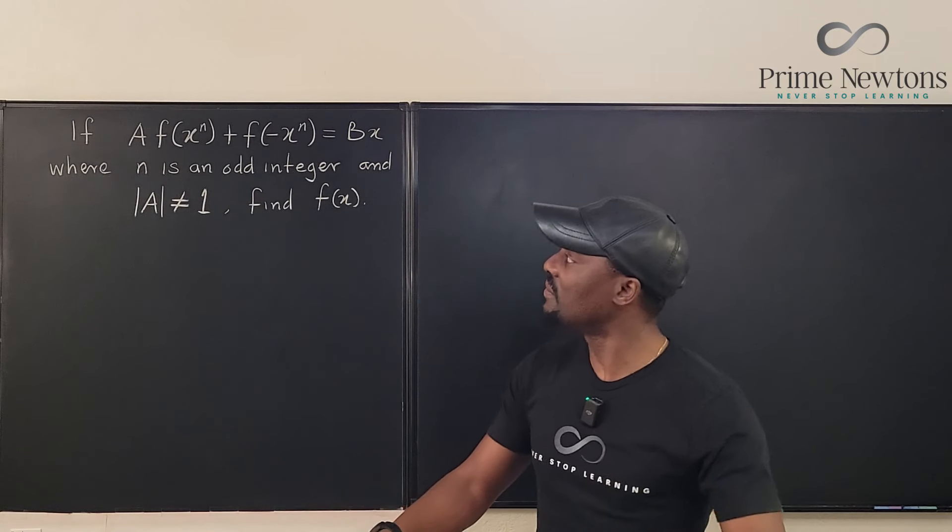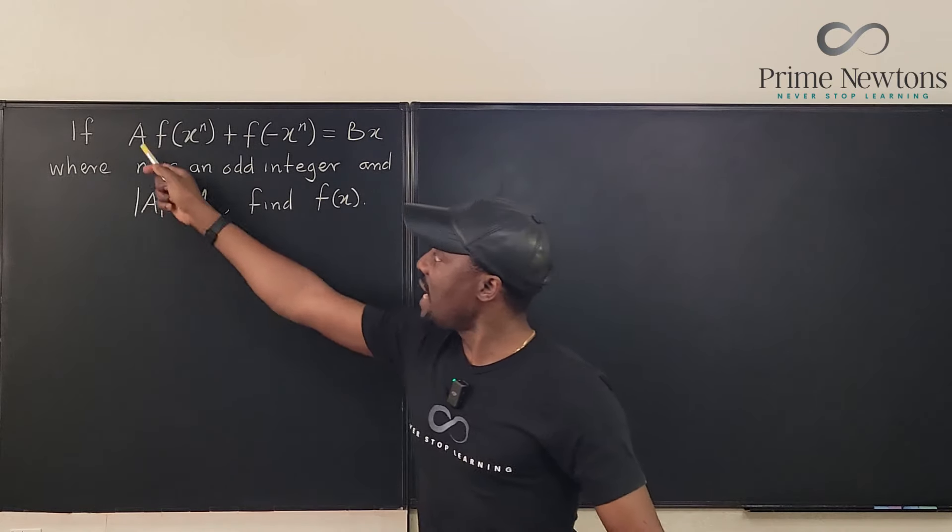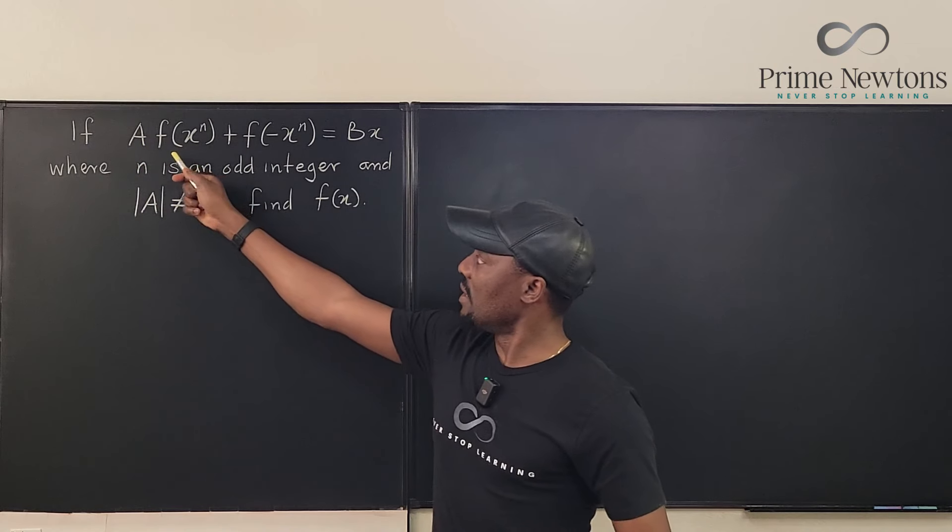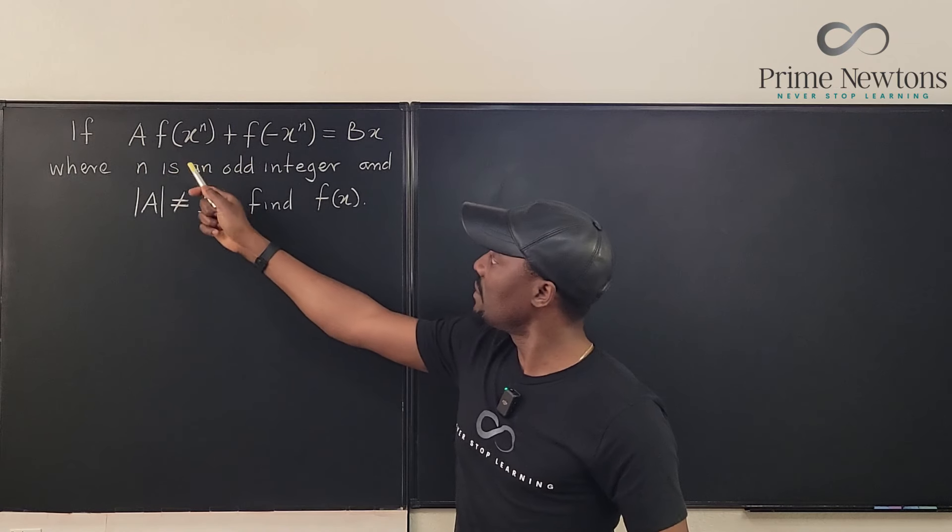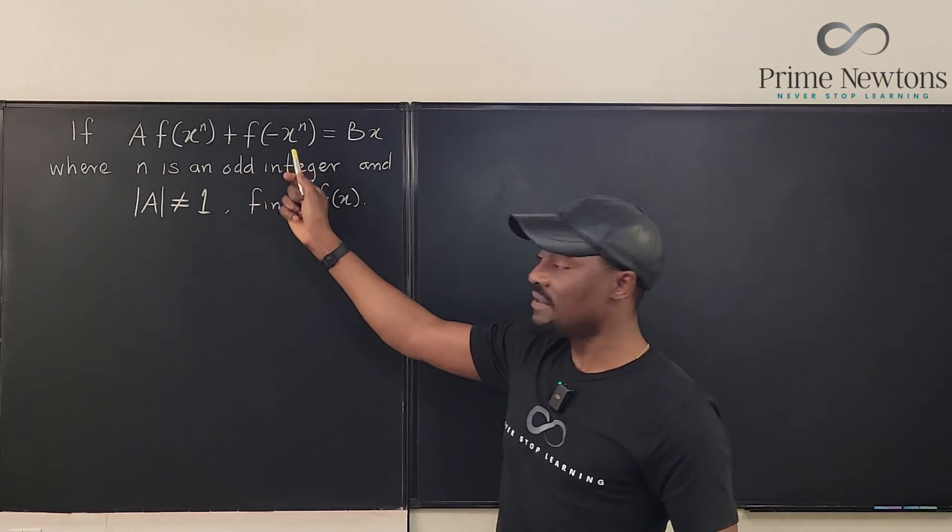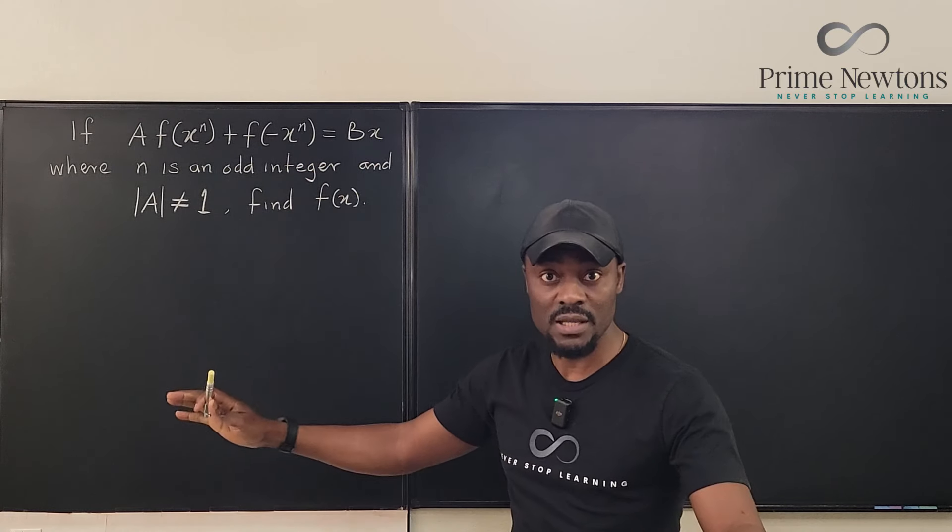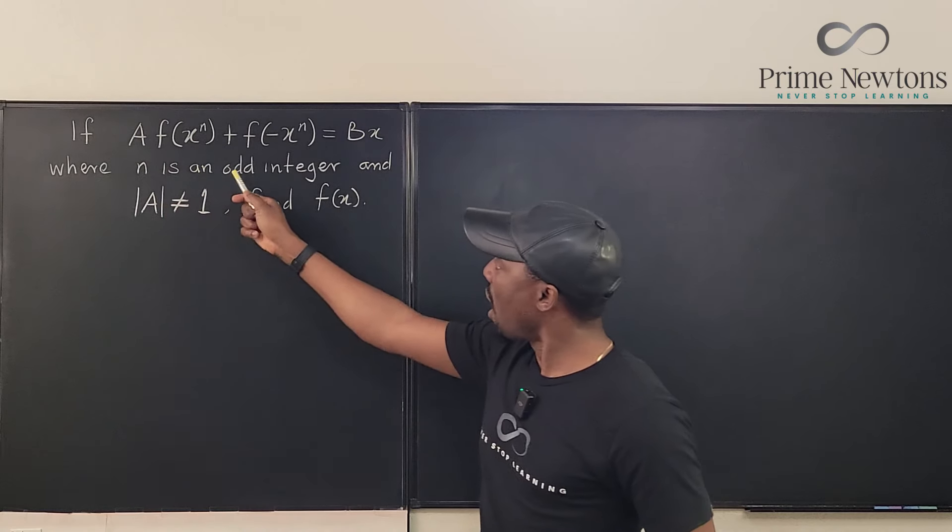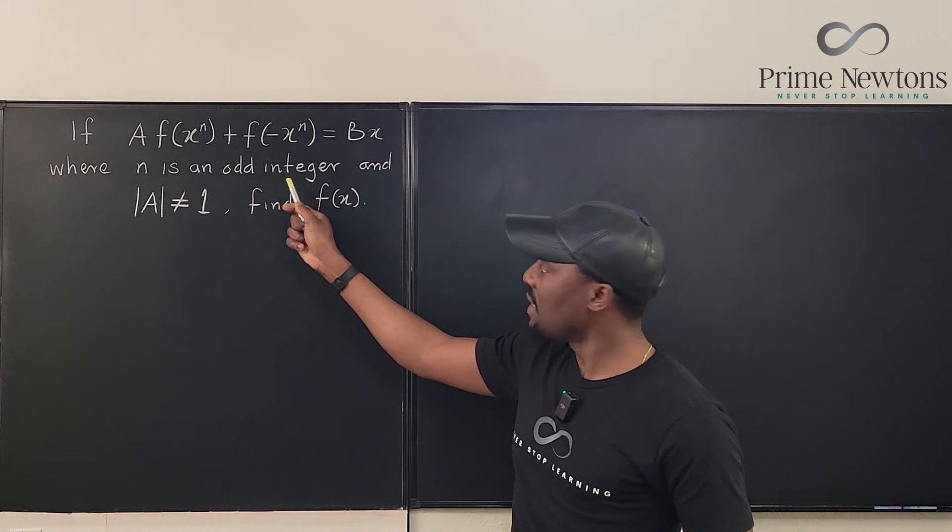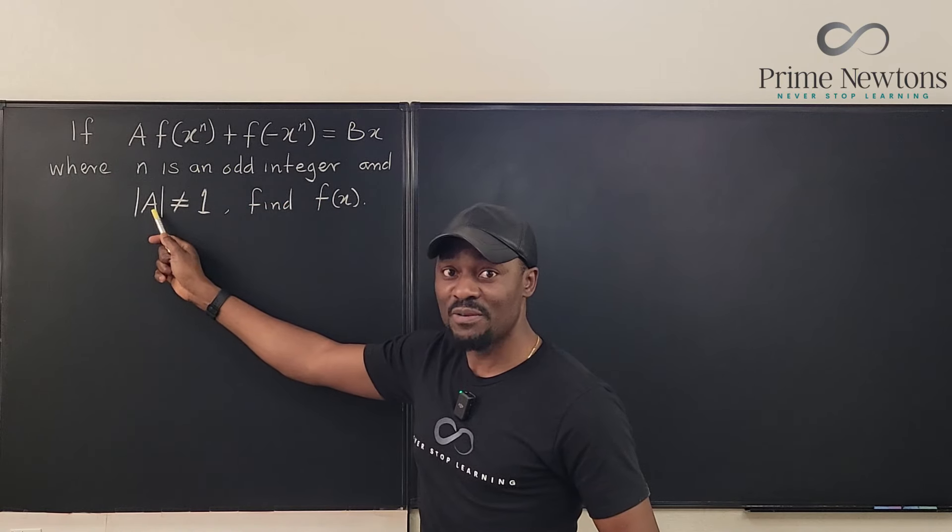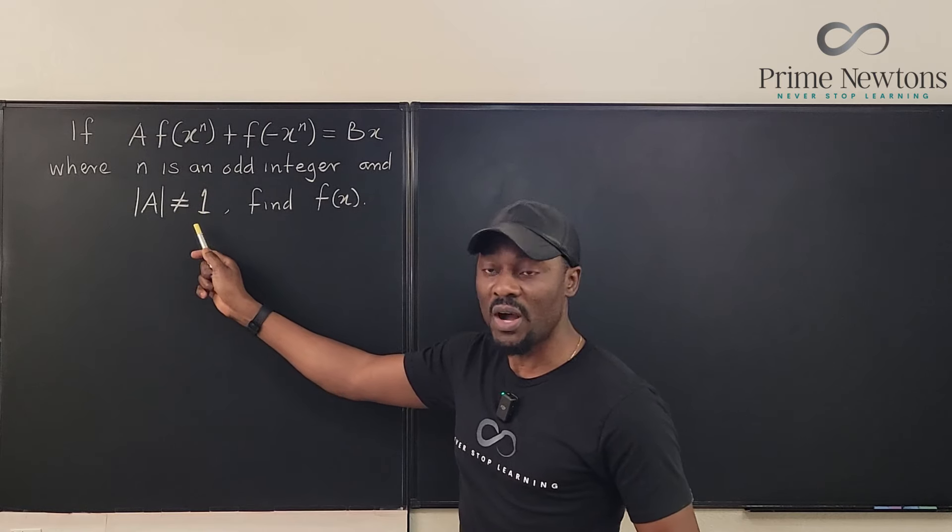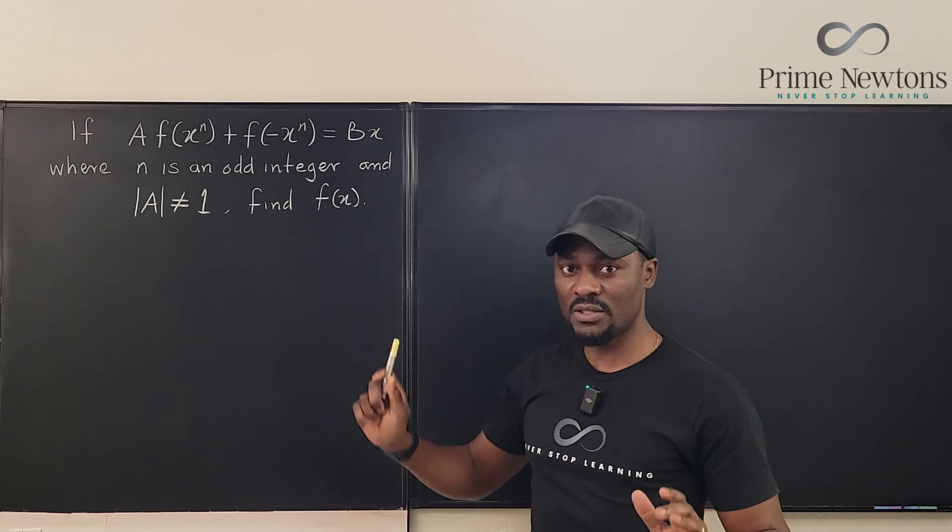Let's read the question first. If A times f(x)^n plus f(-x)^n equals bx, where A and B are constants, and n is an odd integer, and the absolute value of A is not equal to 1, what is the function?